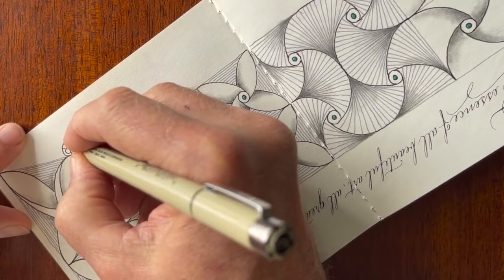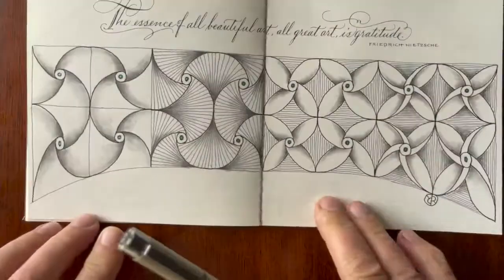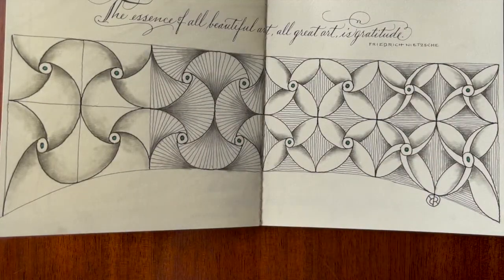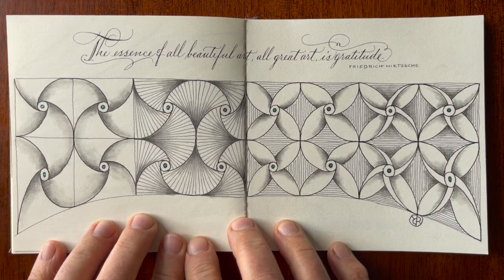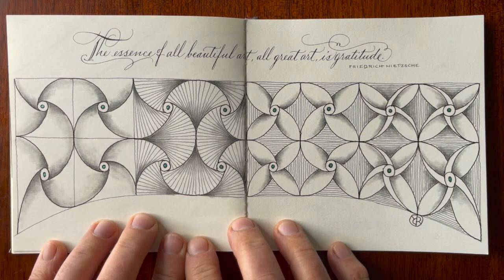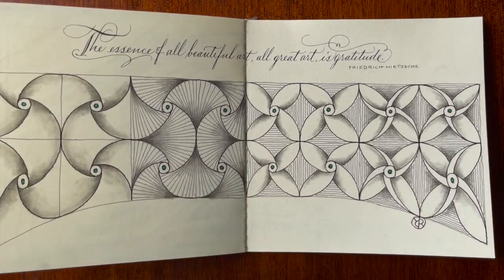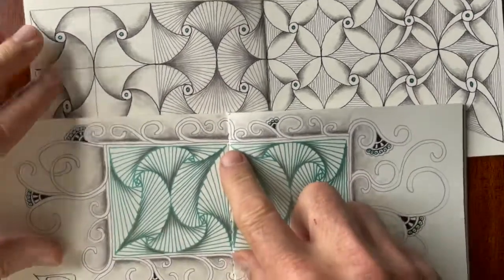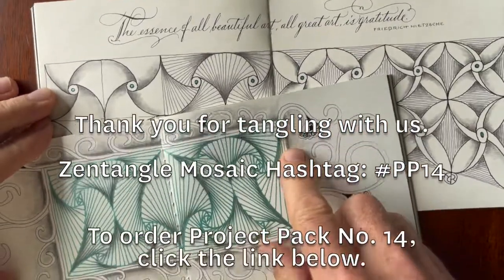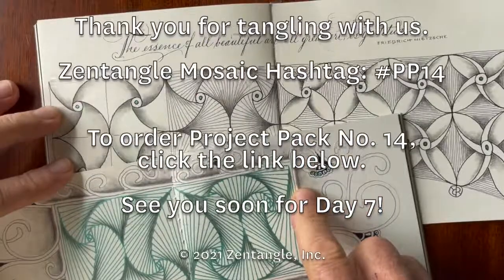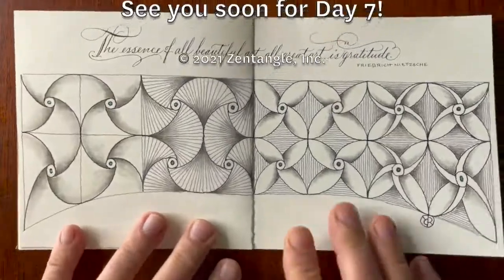And then just to revisit the whole idea that the essence of all beautiful art, all great art, is gratitude. That's how we start tangling. That's how we finish tangling, is to appreciate and be grateful. You're here. And life is an art form. So, there you go. Yeah, so what Maria was saying earlier, look, we ended up with similar results from totally different directions. Thank you so much for enjoying this with us. We'll see you soon. Bye. Bye now. Beautiful.